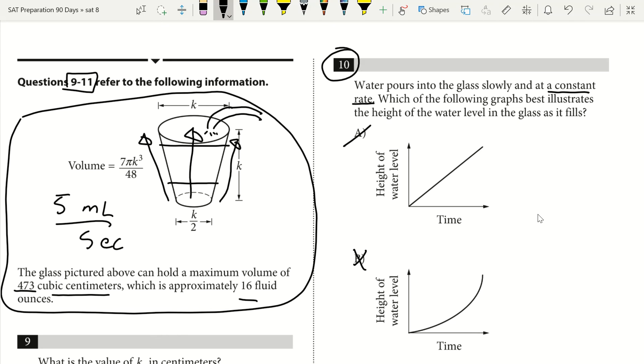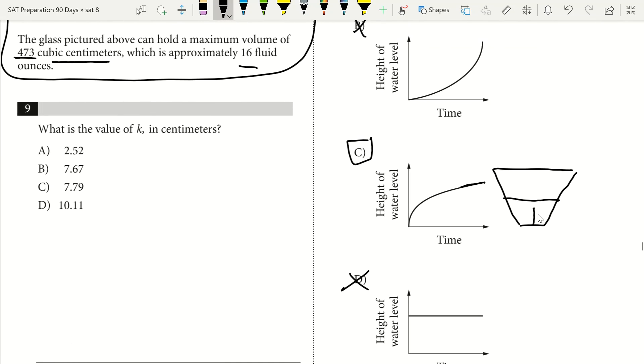If you saw the scenario you would think obviously that cup is getting wider as it goes up, therefore the height is going to change at a slower rate as we fill it with water. So our answer there would be C.